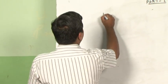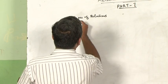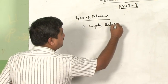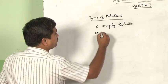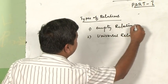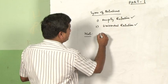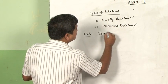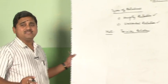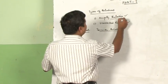Now let us look at the Class 12 topic proper, which starts with the types of relations. There are two types to begin with: one is the empty relation and the second is the universal relation. These two are also called trivial relations — trivial meaning quite insignificant or rarely found meaningful in practice.